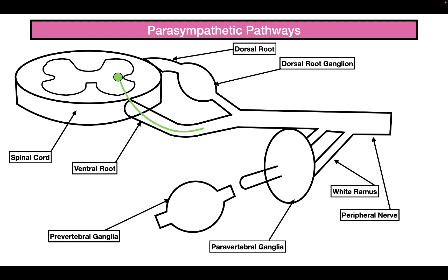The pre-ganglionic parasympathetic neuron will shoot its axon through the ventral root, into the peripheral nerve, and then this pre-ganglionic axon will project onto a post-ganglionic neuron, and the post-ganglionic neuron will then project onto the target cell.